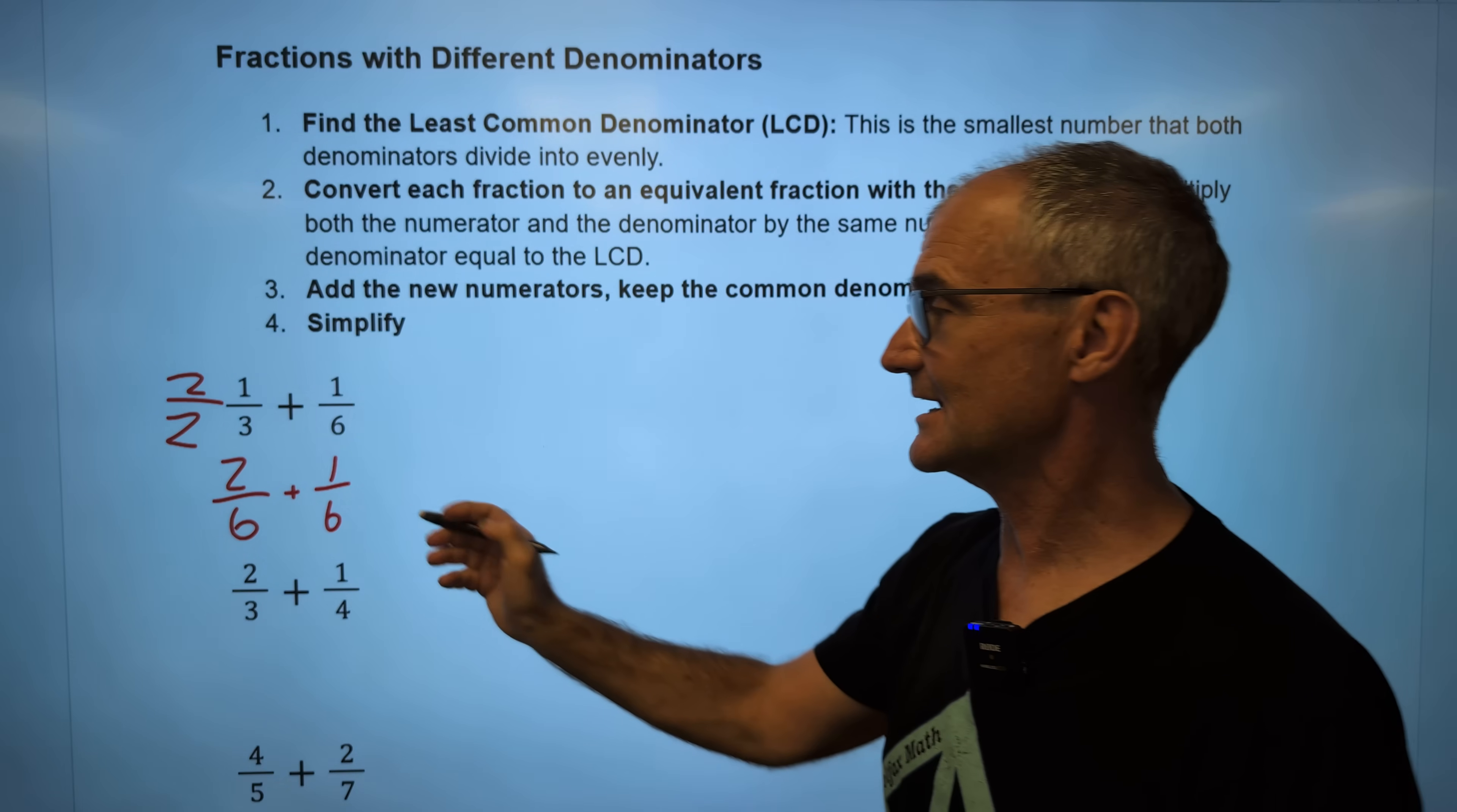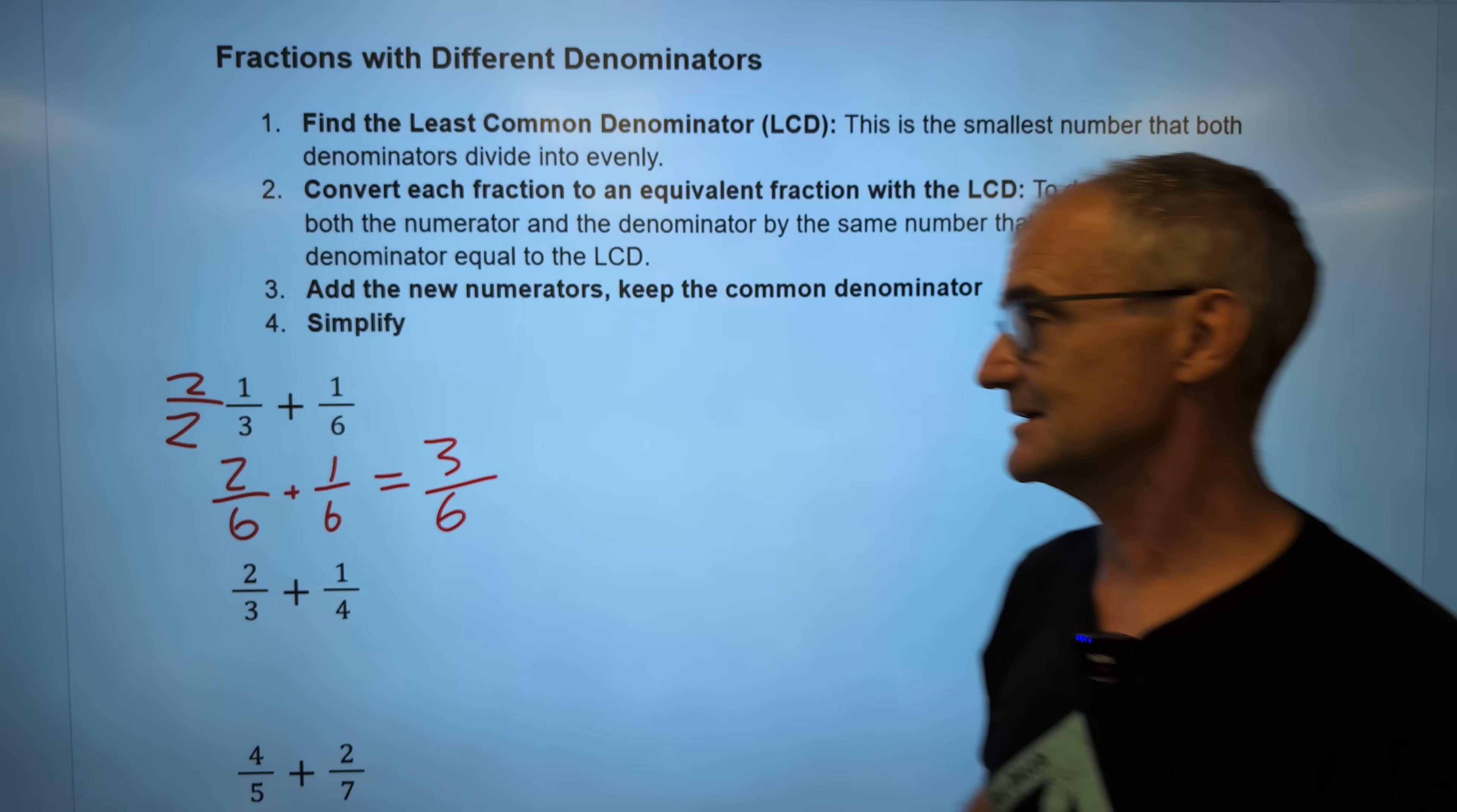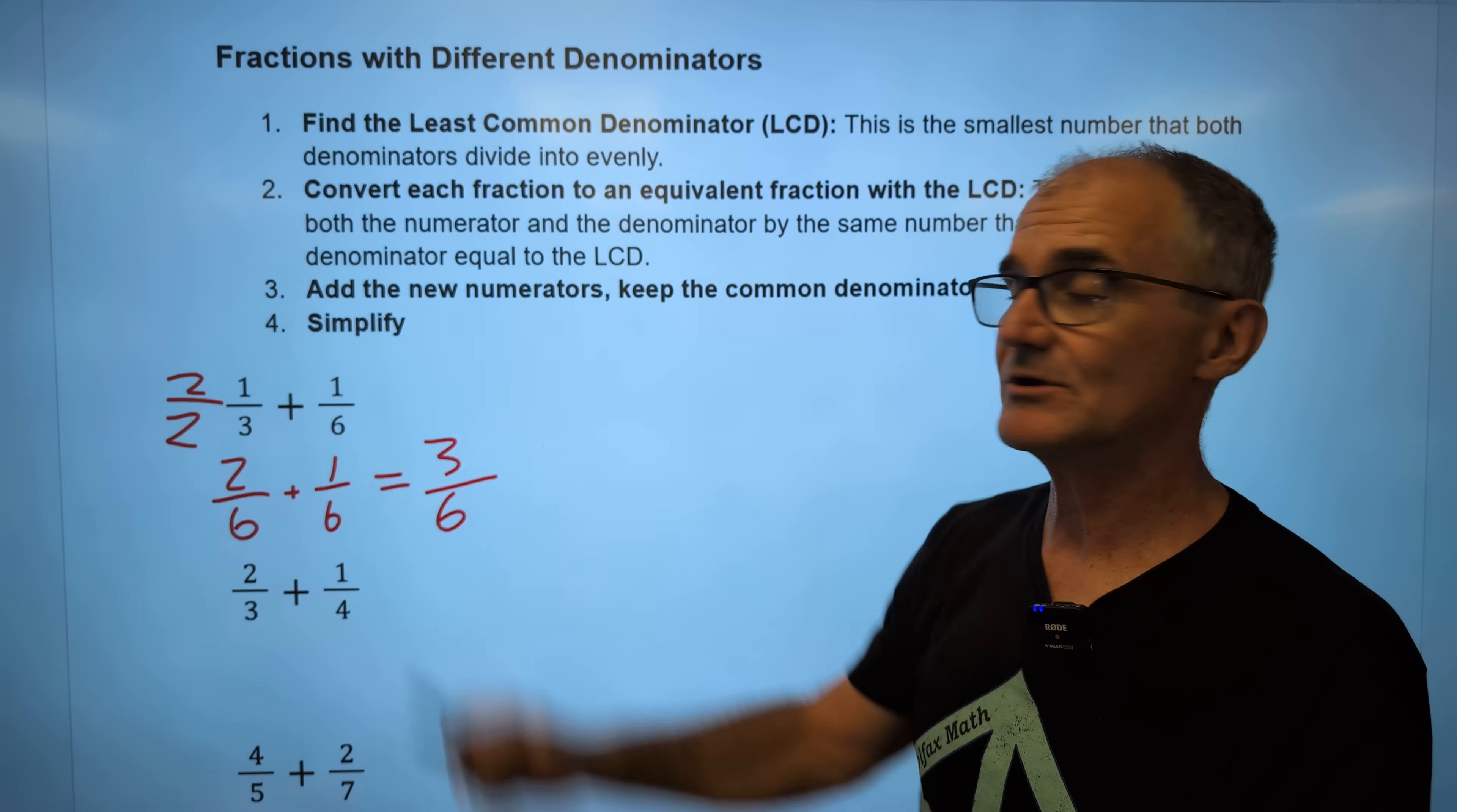Now I add across the top to get three, keep the bottom number the same, six. So my answer is three-sixths. Step four, simplify.